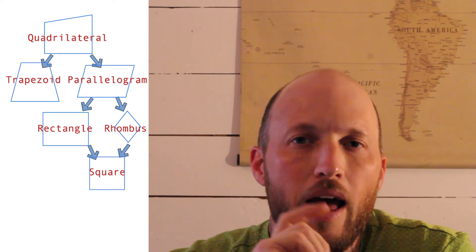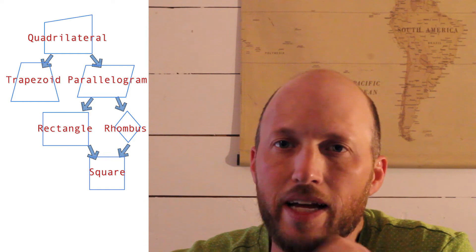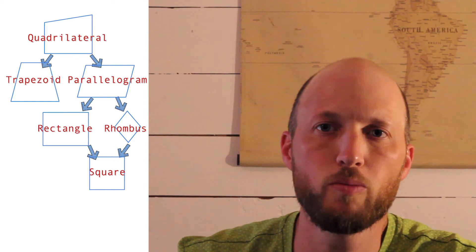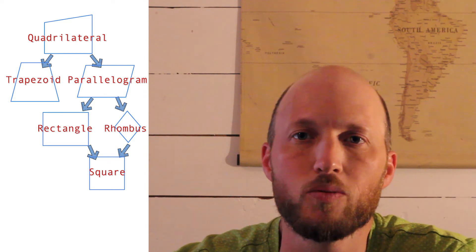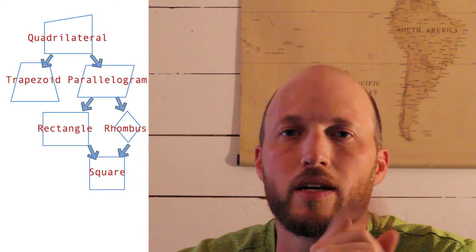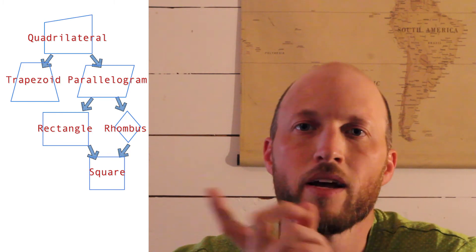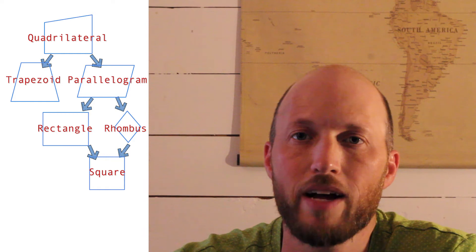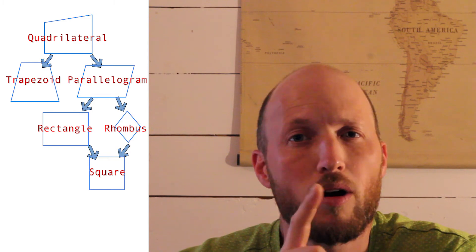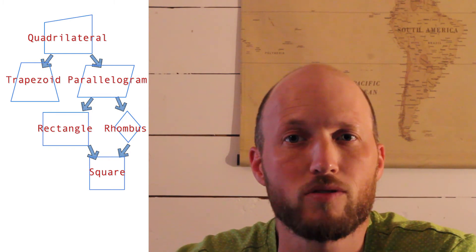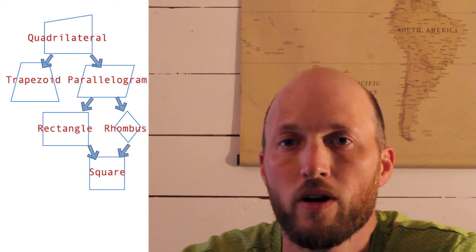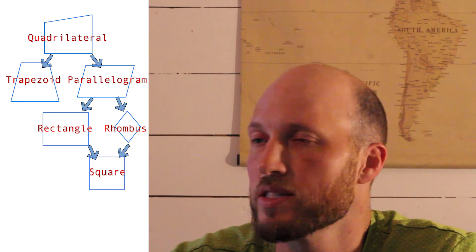Let's answer some true or false questions. True or false: a rectangle is a trapezoid? False — a rectangle has two pairs of parallel sides and a trapezoid only has one. True or false: a square is a quadrilateral? True — a square has four sides so it is a quadrilateral. All squares are quadrilaterals. True or false: all quadrilaterals are squares? False — not all quadrilaterals have four 90-degree angles and all sides the same length.